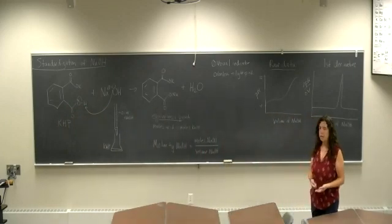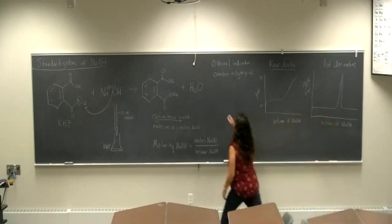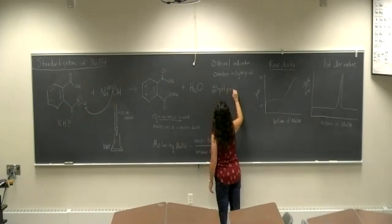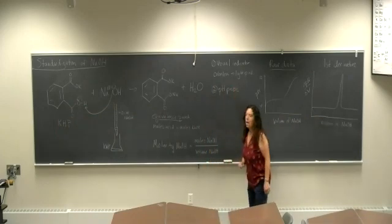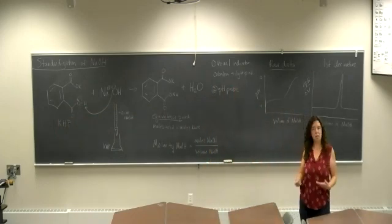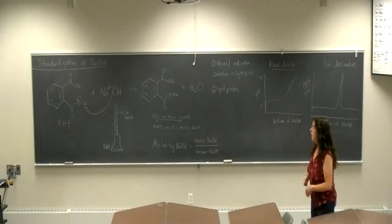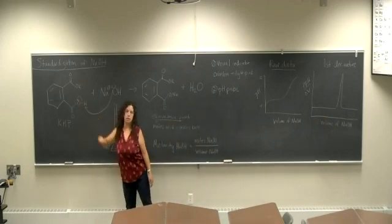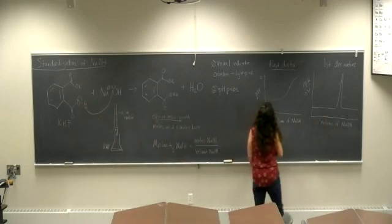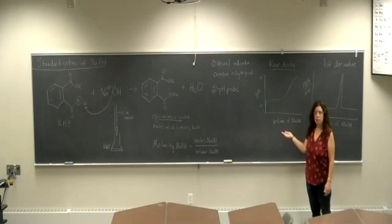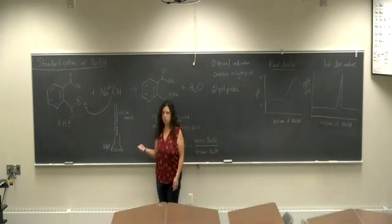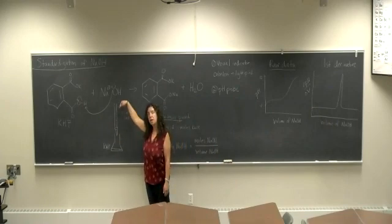The second set of data will be using a pH probe. And the pH probe gives me an electronic readout of the hydronium ion concentration. And so it gives me a sense of how many protons I actually have there. So you'll first collect some raw data.